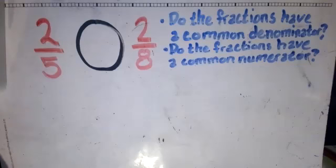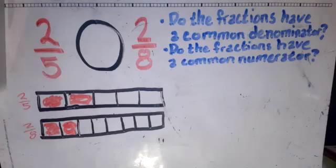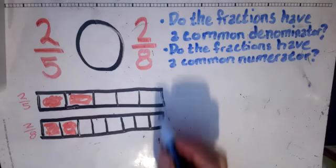Now the numerator is the number at the top of the fraction, which shows how many of those equal pieces we're working with. So for 2/5, we have two of the equal pieces. And for 2/8, we have two of the equal pieces. So we have common numerators.